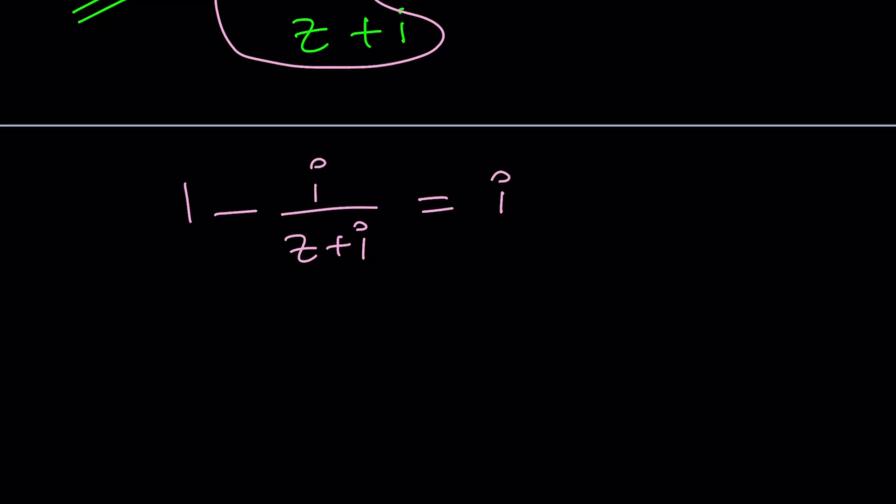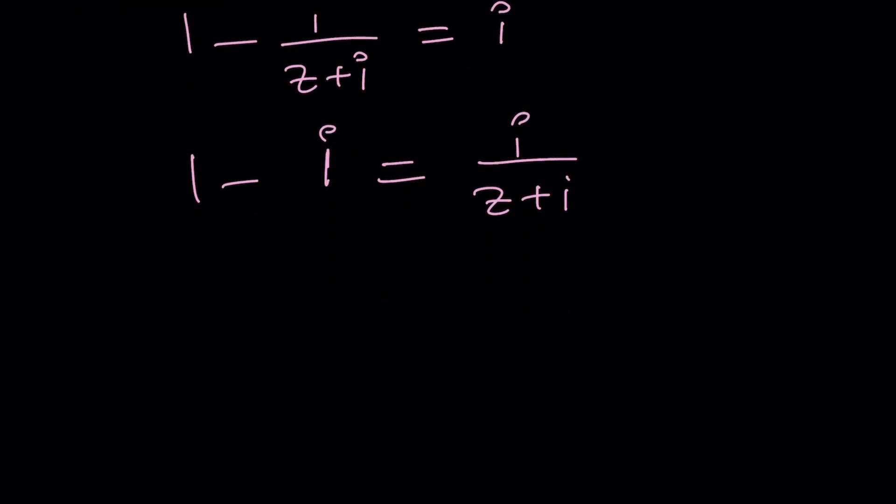So let's go ahead and switch sides here. When you have something like A minus B equals C, it's equivalent to A minus C equals B. So these two can interchange, right? So we get one minus I equals I over Z plus I. Now is a good time to cross multiply, but don't distribute because if you distribute, you're going to go back to square one. So Z plus I times one minus I equals I.